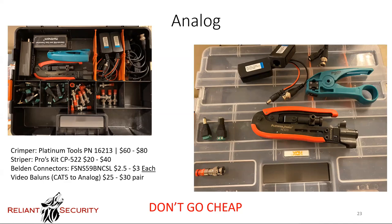Solid copper cable — I may have mistakenly said aluminum. Everything needs to be solid copper, especially on the power side. A lot of Siamese cable is actually copper-clad steel or aluminum — it's just an aluminum wire with copper painted on the outside. Any questions on the analog tools?